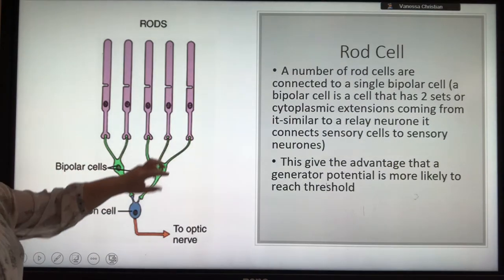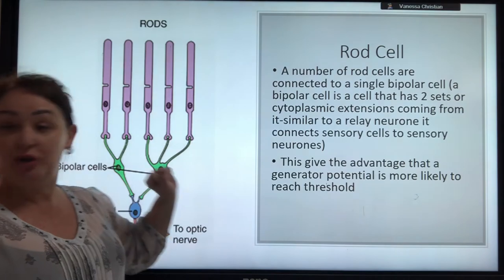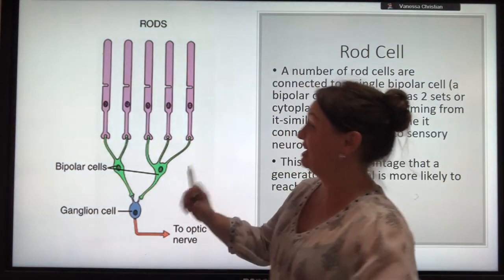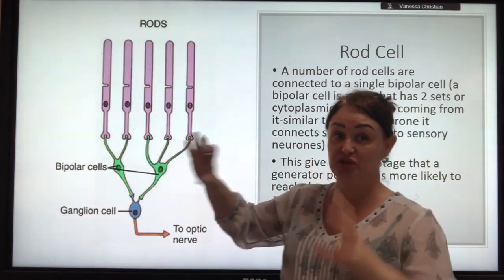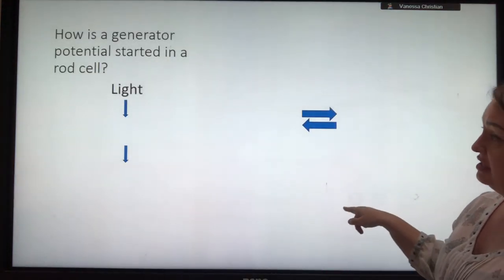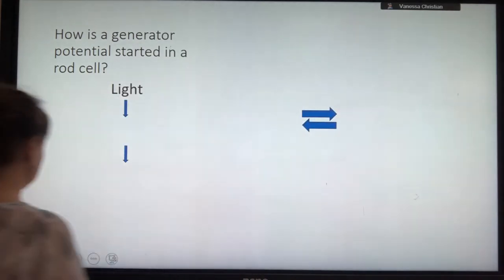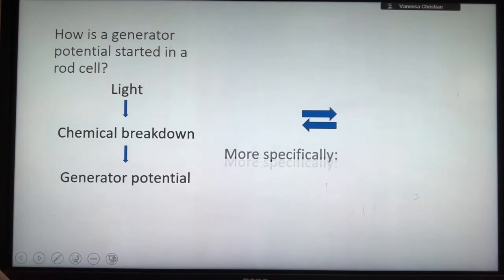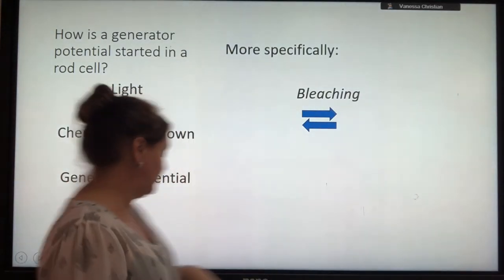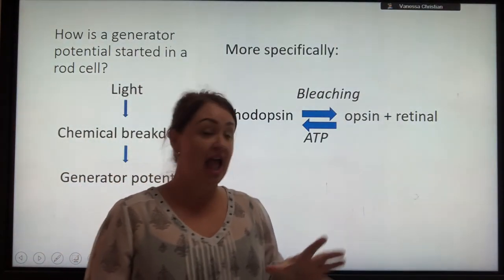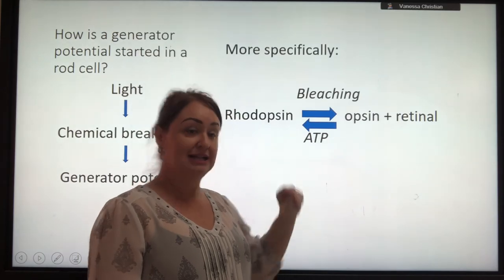So, as we've said, you're more likely to reach thresholds because you've got summation, because they're being added together. And they're being added together because of retinal convergence, because you've got those rods converging. How is a generator potential started in a rod cell? Well, you get light, breaks the chemical down, starts a generator potential, and more specifically, we've said that that process in the rod cell is called bleaching. And we've said that rhodopsin is broken down into opsin and retinal, and to build it back up again, it takes ATP.